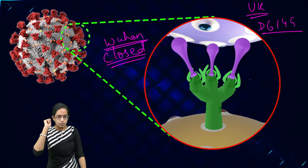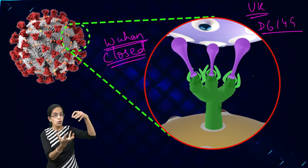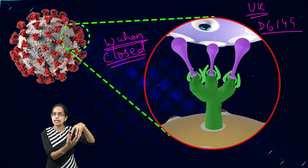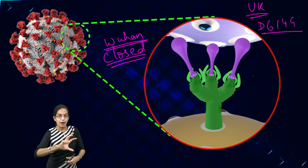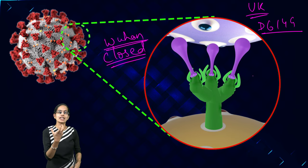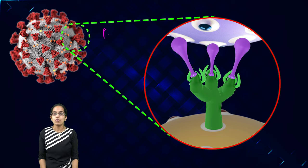Therefore, the structure where they are open would be binding very easily with the human cells and therefore would have a higher capability to infect. But how can this be controlled? Definitely, if you know the answer, it is the antibody response.